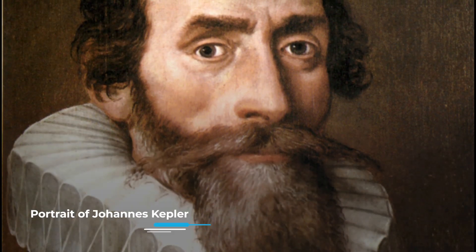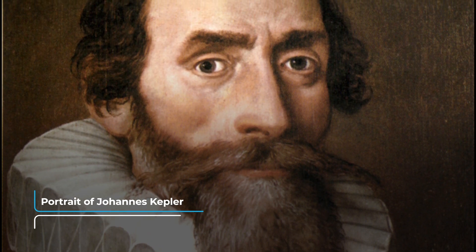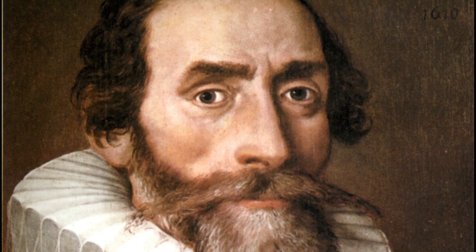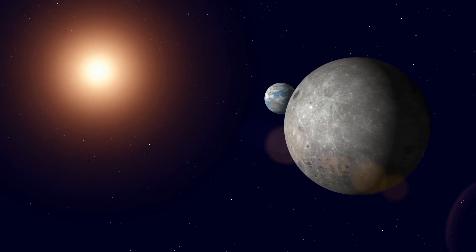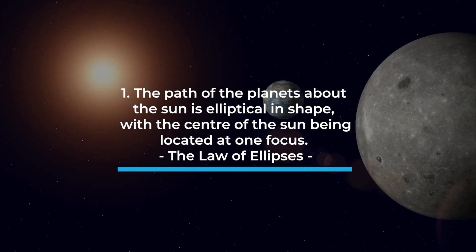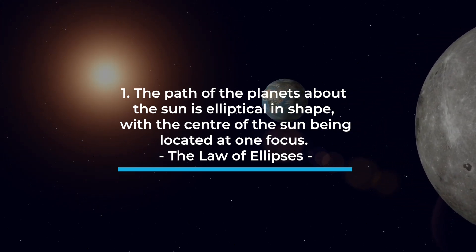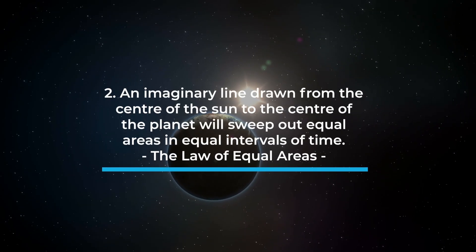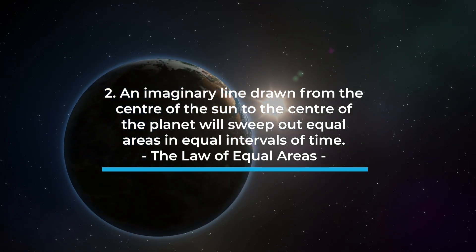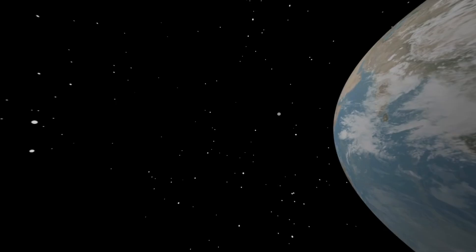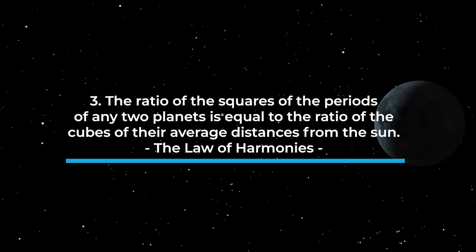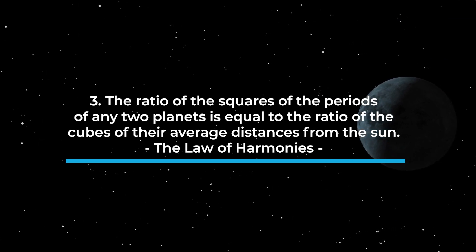Kepler found employment as an assistant to Tycho Brahe and used Brahe's extensive observations to make remarkable breakthroughs, such as the Three Laws of Planetary Motion. First, the law of the ellipse: the path of planets about the sun is elliptical, with the sun at one focus. Second, the law of equal areas: an imaginary line from the sun to a planet sweeps out equal areas in equal intervals of time. Third, the law of harmonies: the ratio of the squares of the periods of any two planets equals the ratio of the cubes of their average distance from the sun.